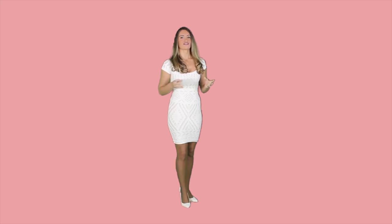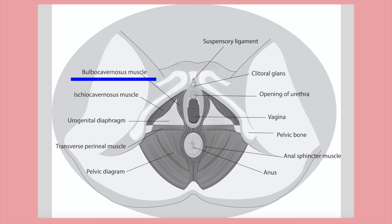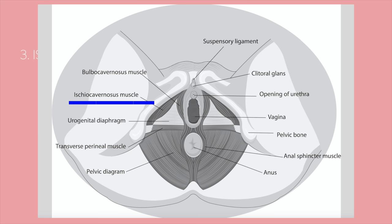Coccygeus, the last pelvic diaphragm muscle, is shaped like a fan and assists the levator ani. The urogenital diaphragm consists of four muscles. The bulbospongiosus surrounds the penis and forms the wall of the vagina, assisting in urination and erection in males and erection of the clitoris in females. The superficial transverse perinei consists of muscle fiber bundles and supports the pelvic viscera. The ischiocavernosus is tendon-like and provides erection assistance to the clitoris and penis. The sphincter urethrae originates from the ischial and pubic bones and functions as the urethral sphincter to allow excretion of urine.